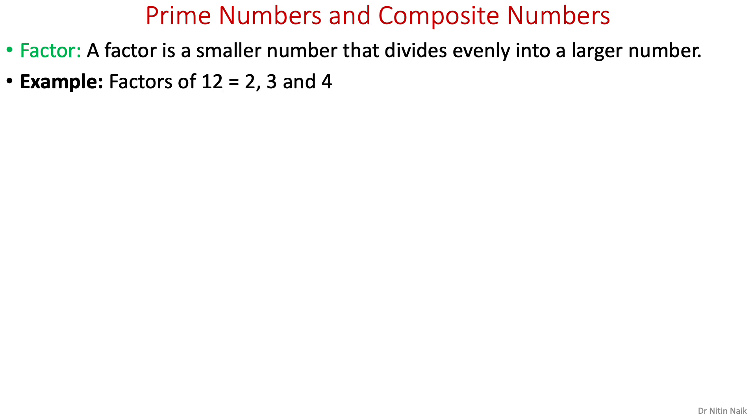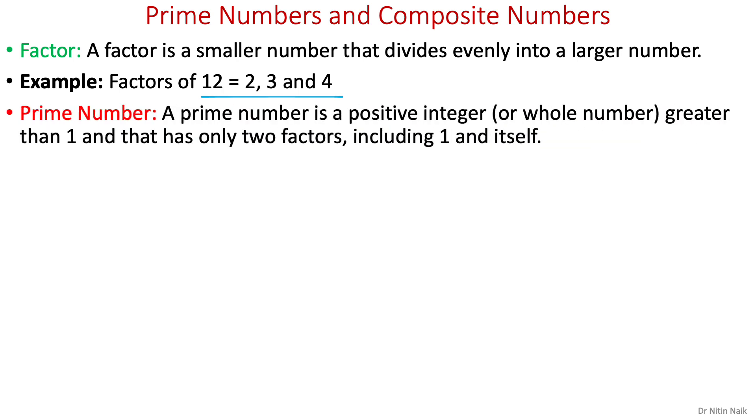2, 3, and 4 are factors of 12 because 12 can be divided evenly by these numbers. So what is a prime number? A prime number is a positive integer or whole number greater than 1 that has only two factors, including 1 and itself.